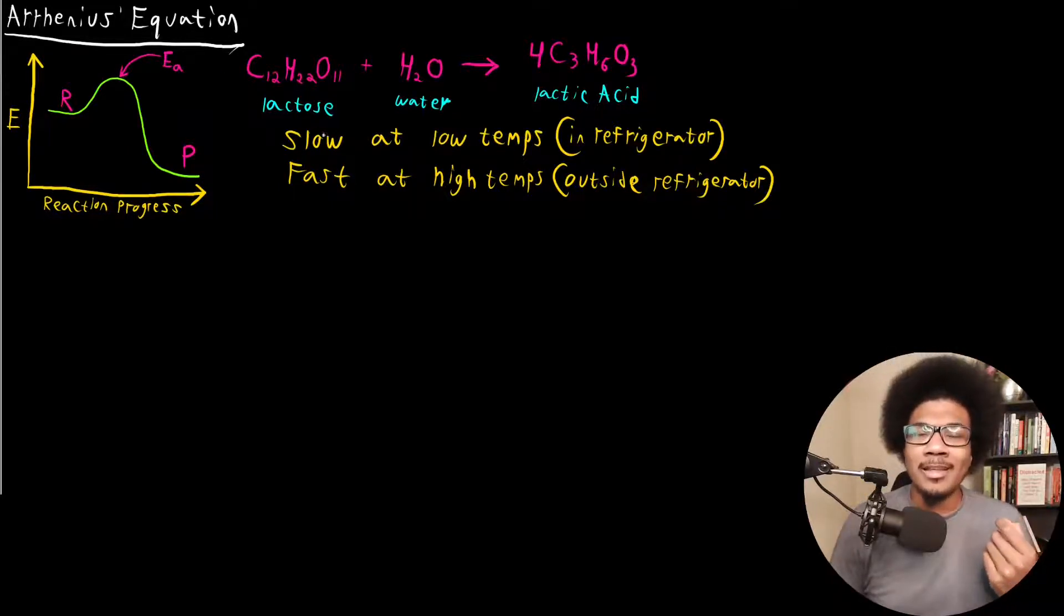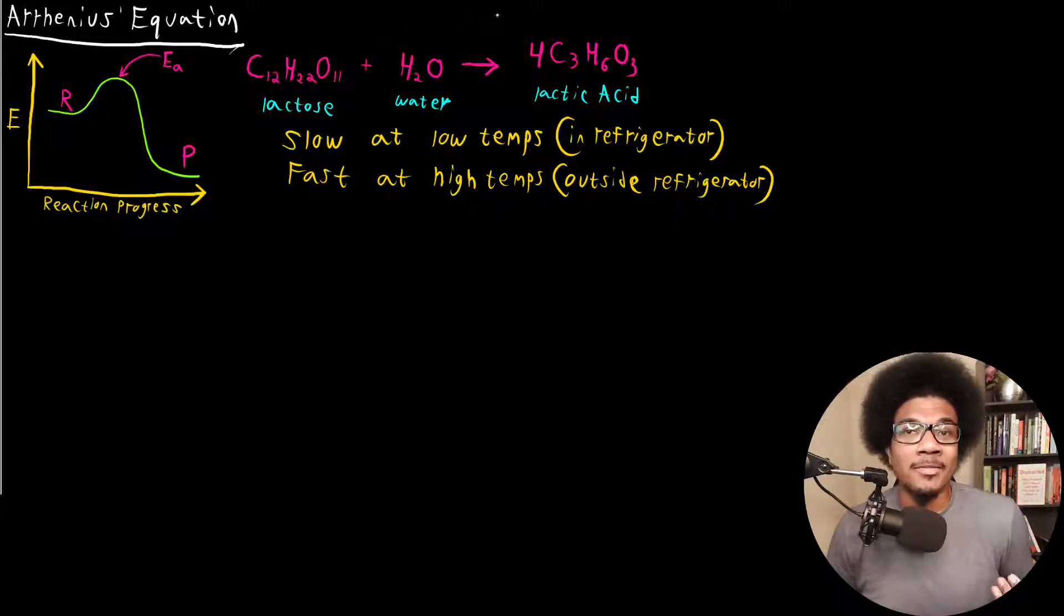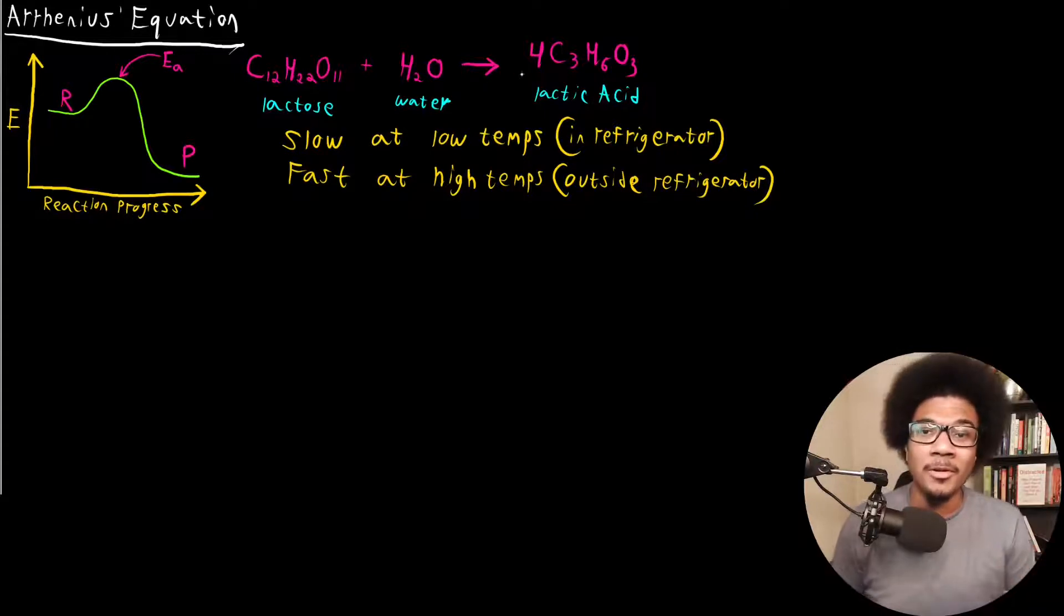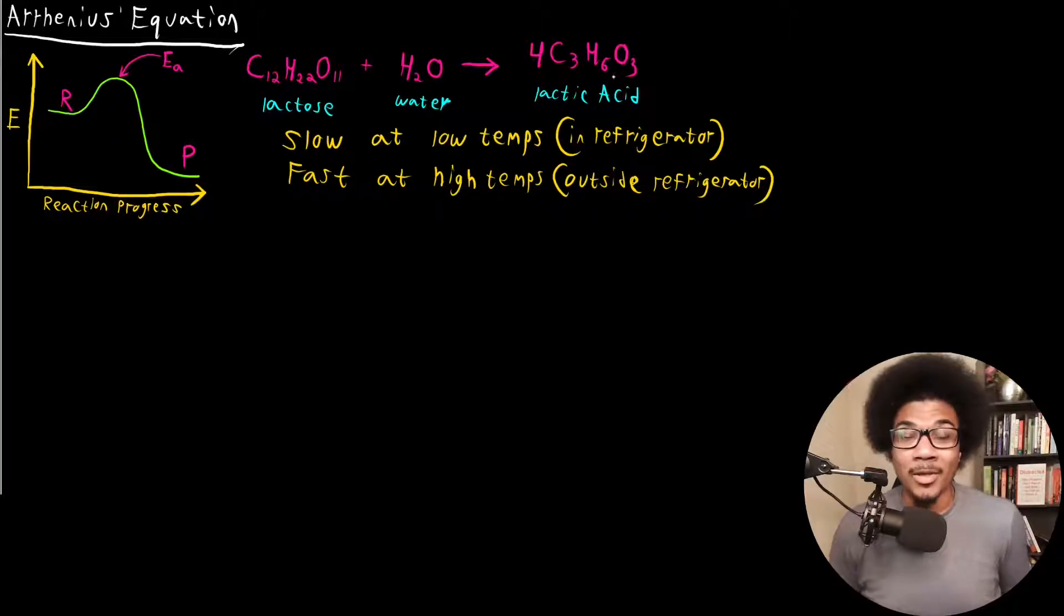Right now we're just making sure that you have an understanding of this concept of an activation energy. Where I feel like this idea of temperature is intuitive is in a common example that everyone's familiar with. You've all seen or hopefully you haven't drank any spoiled milk, but you know that milk spoils over time. Milk contains lactose and when it interacts with water in the atmosphere, it forms lactic acid. This is part of the spoiling process of milk.